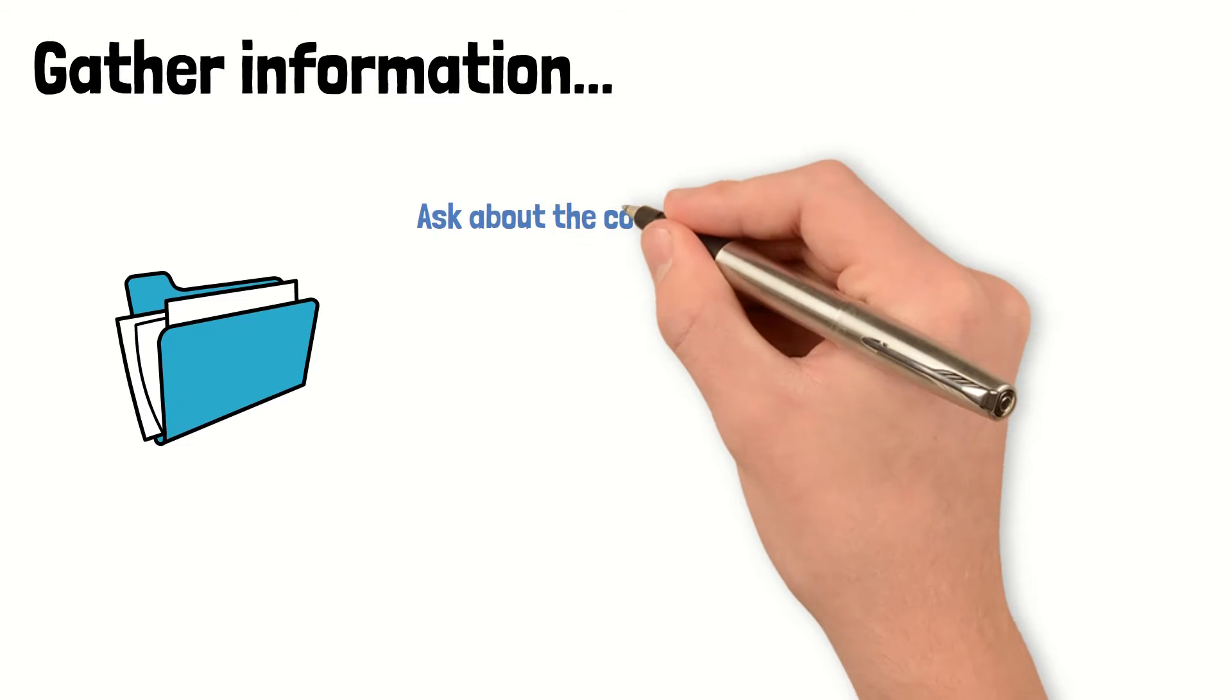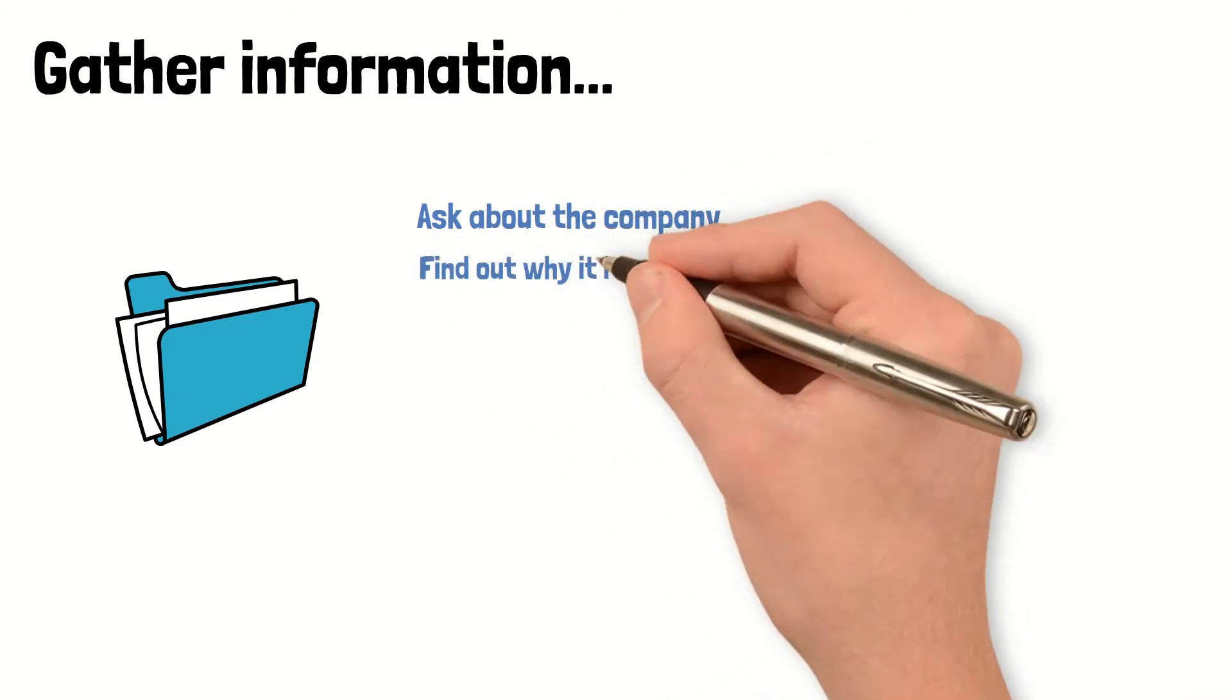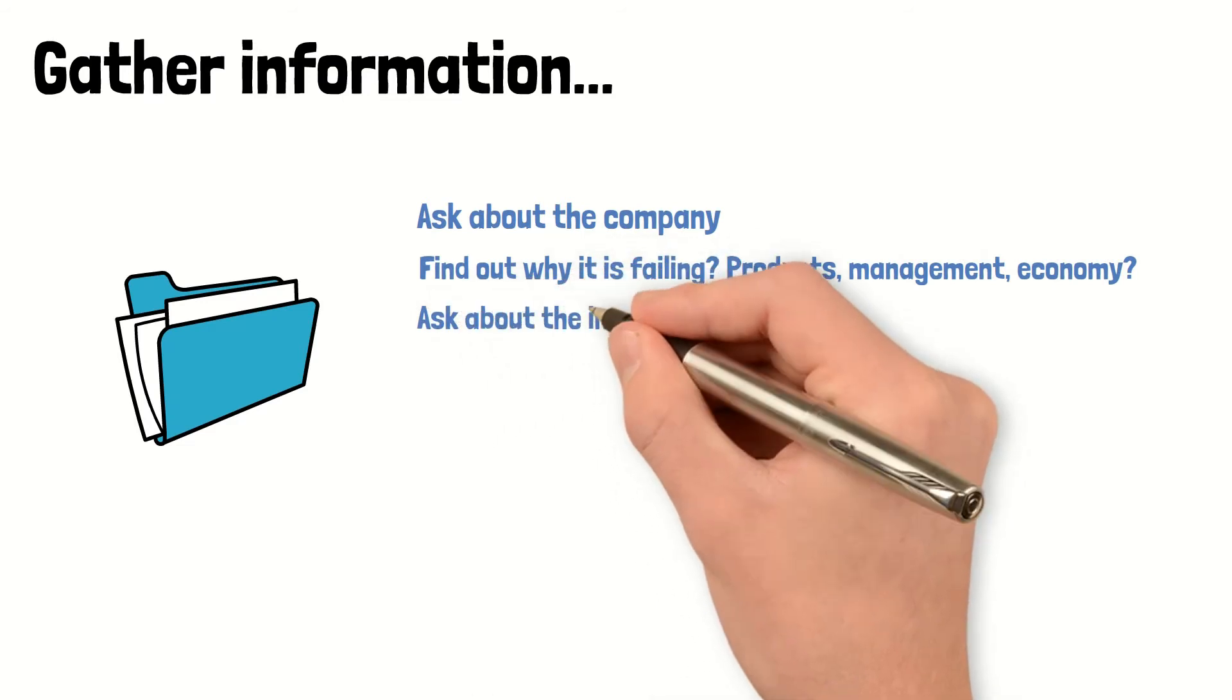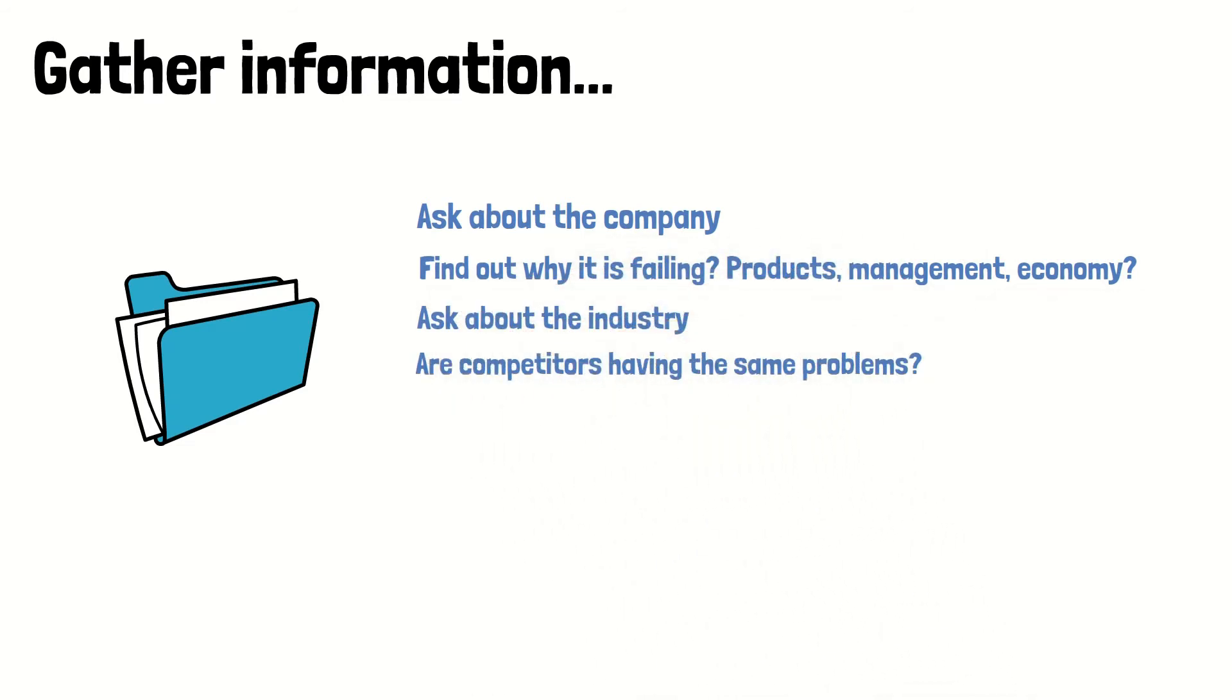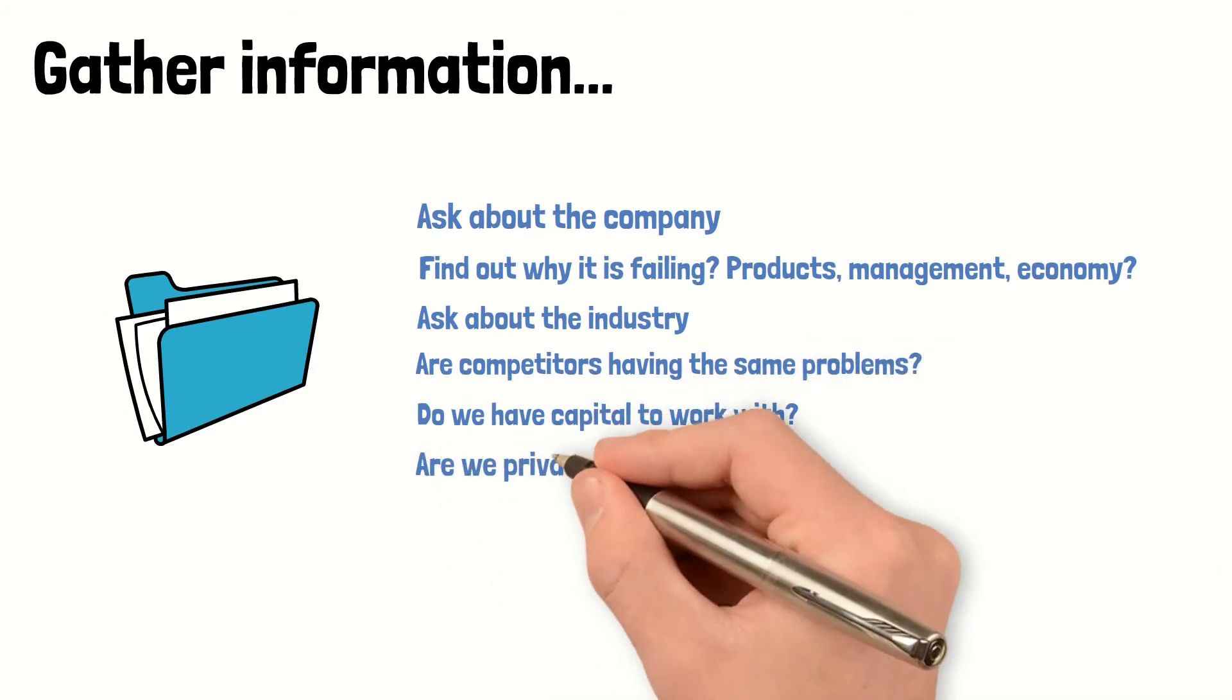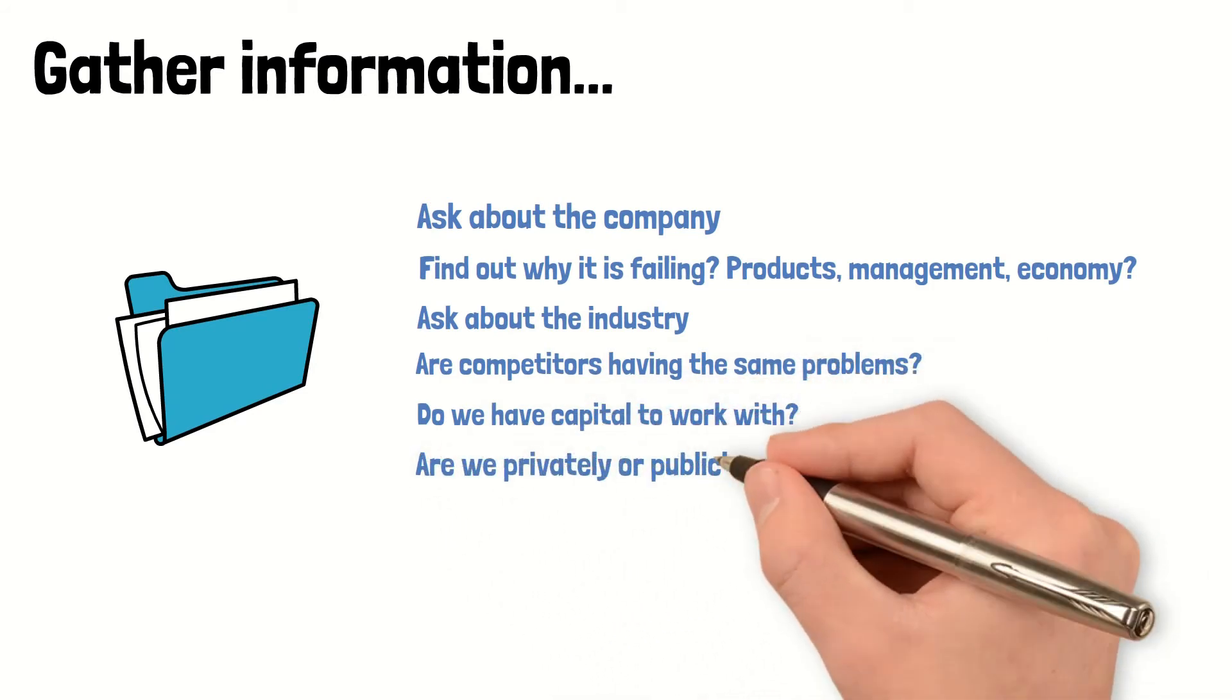First, gather information. Ask them about the company. Find out why it's failing. Is it the products, the management, the broader economy? Ask about the industry. Evaluate if competitors are having the same problem. Find out if we have excess capital to work with and evaluate if it's privately or publicly held.